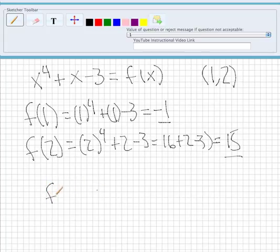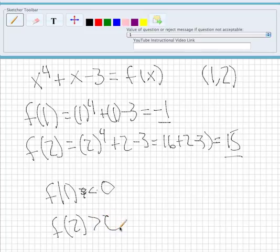So F of 1 is less than 0 and F of 2 is greater than 0. So that means somewhere in between those two points at 1 and 2 there will lie a zero or a root.